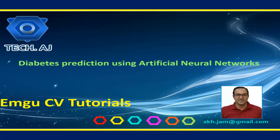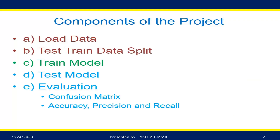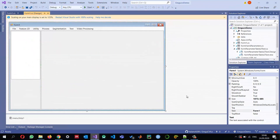Hello and welcome to this new tutorial. Today I'm going to create a project in which we are going to predict diabetes using artificial neural networks. This project is divided into different components. In the first tutorial I'll show how to load data from CSV files and divide it into test and train datasets. In the second tutorial we'll train an artificial neural network. In the last tutorial we'll test it and evaluate using a confusion matrix, calculating accuracy, precision, and recall.